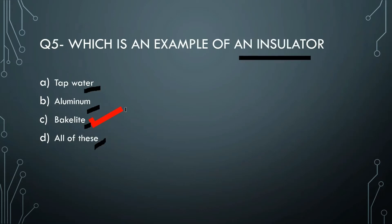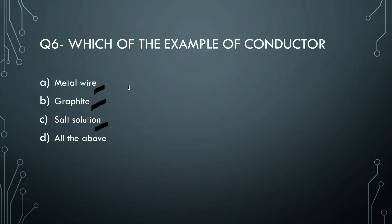Tap water is also a conductor because it contains chemicals and minerals. Pure water, however, is an insulator. Salt in water makes it a conductor - that is why salt solution conducts electricity. All of the above - metal wire, graphite, and salt solution - are conductors.